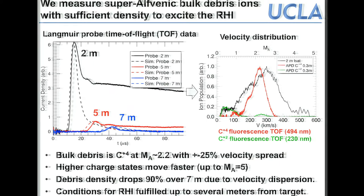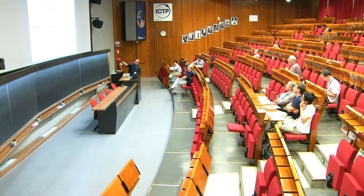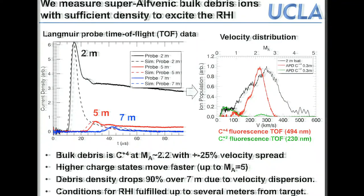Using a spectrometer we can look at separate charge states: carbon-plus-four is the bulk debris, but there are faster ions at higher charge states (possibly C+5, C+6, or protons) and slower carbon-plus-two ions. The velocity spread is amplified by the spread in charge states, which is crucial because it leads to a drop in density with distance from the target. At 5 or 7 meters the total ion current is significantly lower due to the longitudinal velocity spread — near the target the conditions for RHI growth are met, far away they are not.